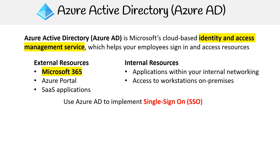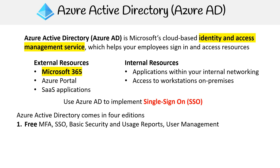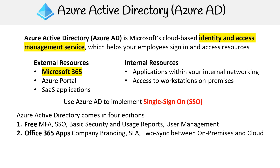One of the best features of Azure AD is single sign-on — that's what a lot of companies want it for. In terms of what types of Azure Active Directory there are, it's broken down to four editions, with each subsequent tier having all the features of the previous tier. The free tier includes multi-factor authentication, single sign-on, basic security, usage reports, and user management.